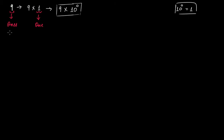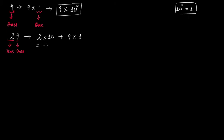Let's take another example. Let's say our number is 29, a two-digit number. This place will be the 1's place and this will be the 10's place. So this number can be written as 2 times 10, because the multiplication factor for the 10's place is 10, plus 9 times 1. This gives us 2 times 10 to the first power plus 9 times 10 to the exponent 0. This is the exponential form of 29 using powers of 10.